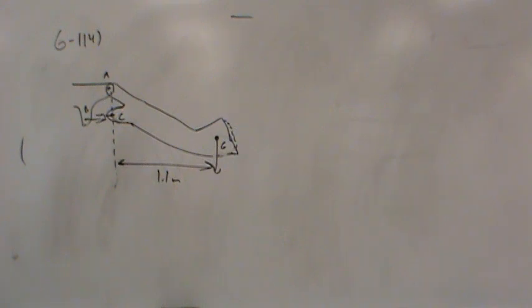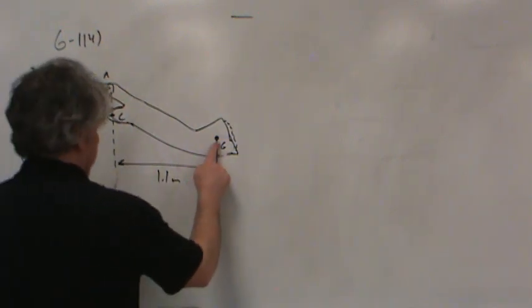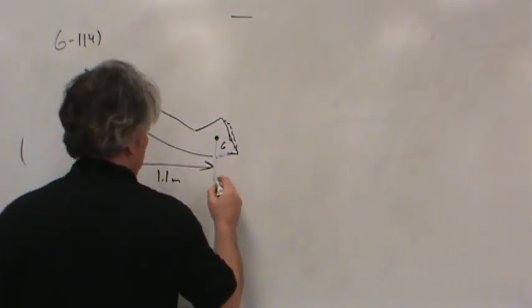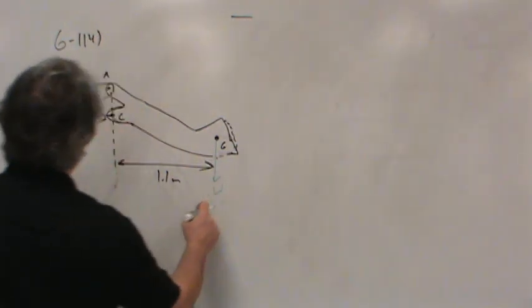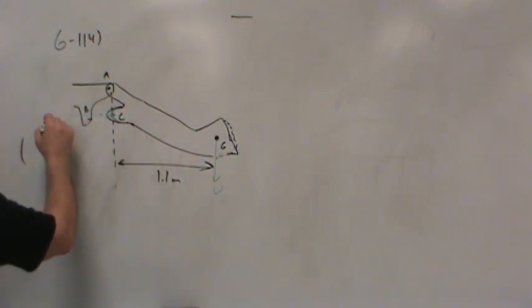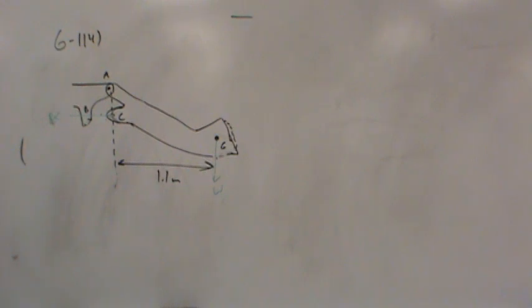And then the vertical distance, that's going to be a little bit of a trick. But do we need it? How am I going to approach this problem? What would a good strategy be here? Sum moments about what point? How about A? Now I'm going to put my free body diagram right on top of this drawing. I need the weight at G, let me just call it W. And what I really care about is the force applied to this body by the hydraulic cylinder BC.